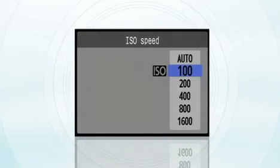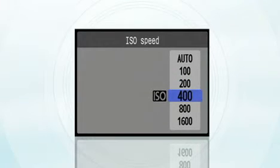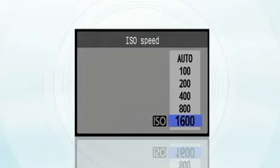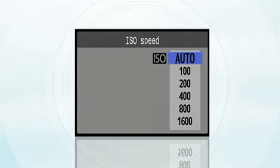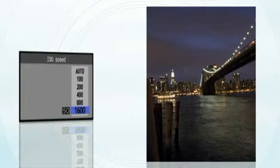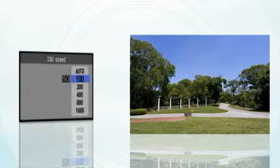ISO speed settings: the ISO determines your camera's sensitivity to the light. You can adjust your ISO manually or let the camera adjust it automatically. Generally, you use a higher ISO setting in low light and a lower ISO setting in bright light.